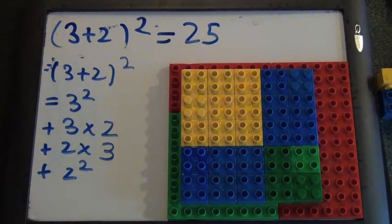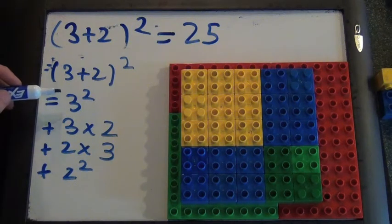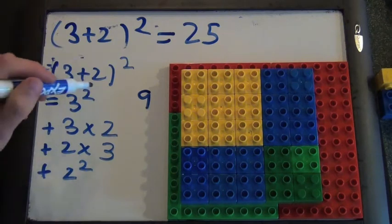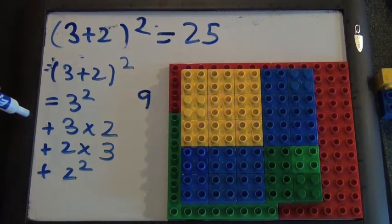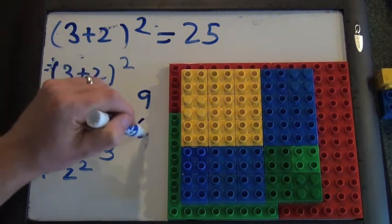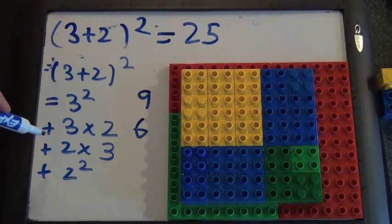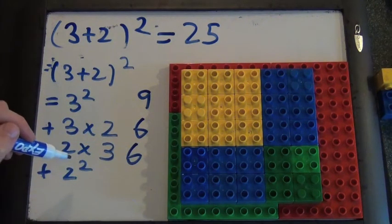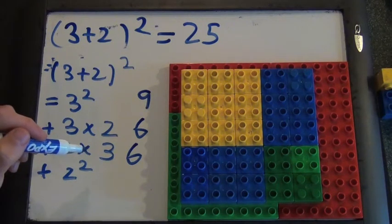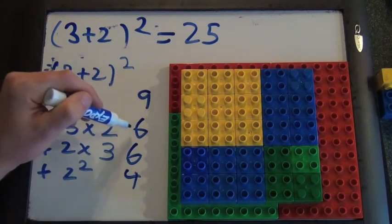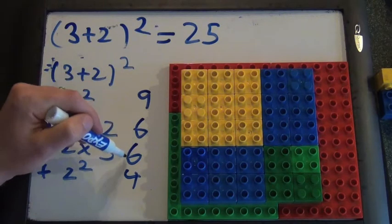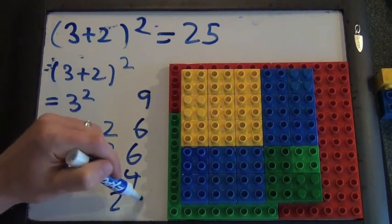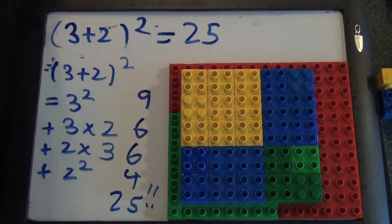Let's see if this equals 25. Three squared is nine. Three times two is six. Two times three is six. Two squared is four. So nine plus six is fifteen, fifteen plus six is twenty-one, and twenty-one plus four is twenty-five. Exactly what we thought!